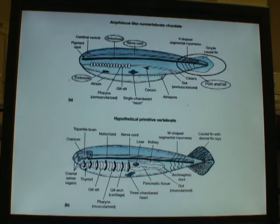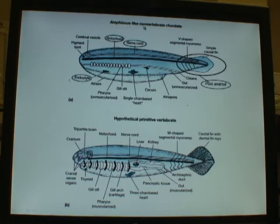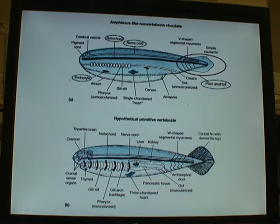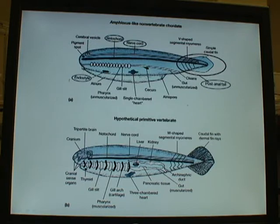This is a diagram from your textbook showing some general features. Up here is an amphioxus-like non-vertebral chordate — a generic cephalochordate. Below here, you have a hypothetical primitive vertebrate. This is a hypothetical form based on living representatives that haven't changed much since they first appeared on the scene.